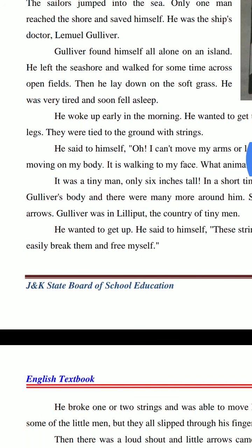Gulliver found himself all alone on an island۔ تو جب Gulliver وہاں پہنچا وہ بالکل اکیلا ہوتا ہے اس island پہ — جو چاروں طرف سے سمندر سے گھرا ہوتا ہے۔ He left the sea shore and walked for some time across open fields۔ وہ سمندر کا ساحل چھوڑ دیتا ہے اور تھوڑا آگے نکل جاتا ہے جہاں کھلے fields ہوتے ہیں۔ Then he lay down on the soft grass۔